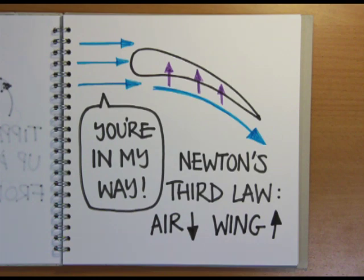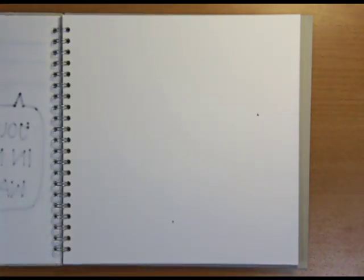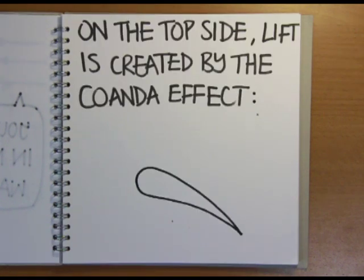So that's how lift is created on the underside of the wing. Now let's look at the top side, where it's a bit more complicated. The air is once again deflected downwards, but this time by something called the Coanda effect.